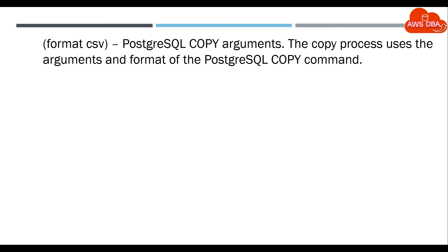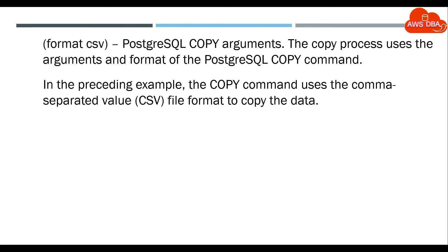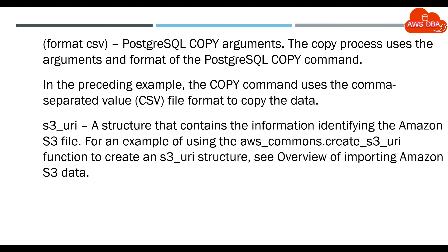Format CSV — PostgreSQL copy arguments. The copy process uses the arguments and format of the PostgreSQL copy command. In the preceding example, the copy command uses the comma-separated value (CSV) file format to copy the data. S3_URI — a structure that contains the information identifying the Amazon S3 file. For an example of using the aws_commons.create_s3_uri function to create an S3_URI structure, see overview of importing Amazon S3 data.